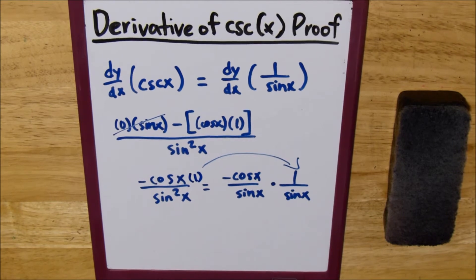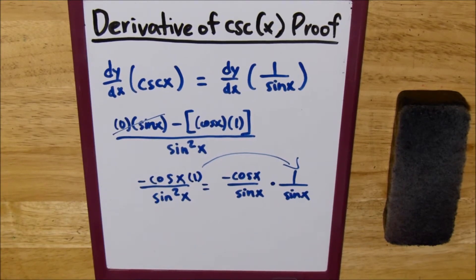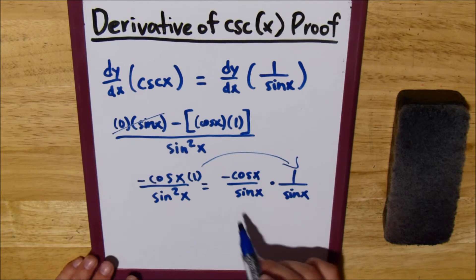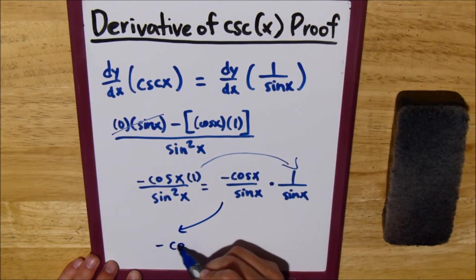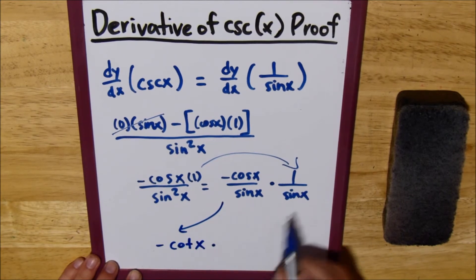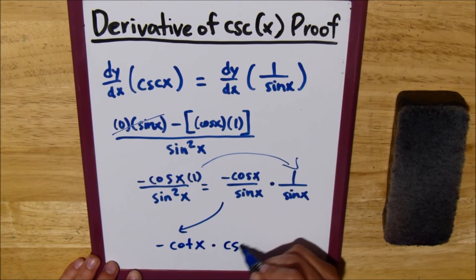And with this, we can simplify these into terms of cotangent, secant, and I'm pretty sure this turns into negative cotangent of x, and this one turns into cosecant of x.